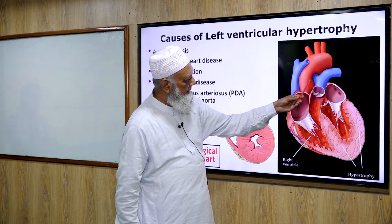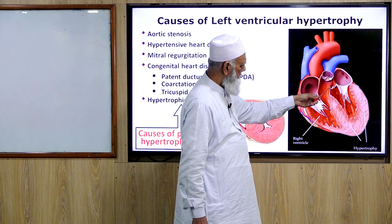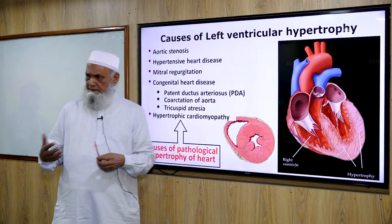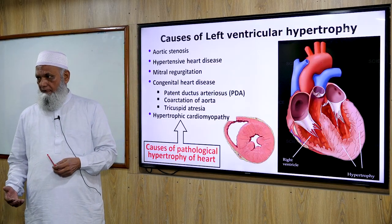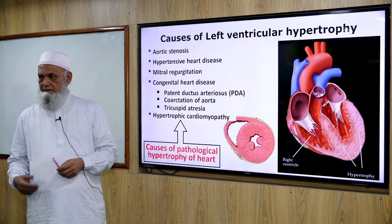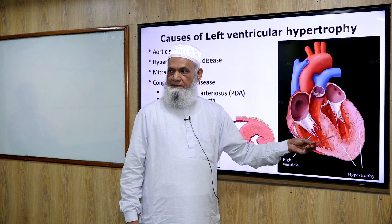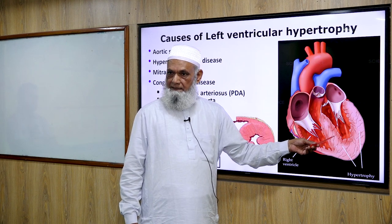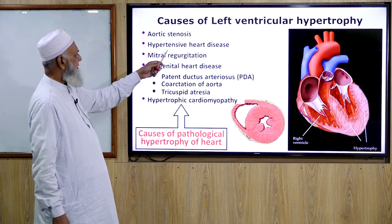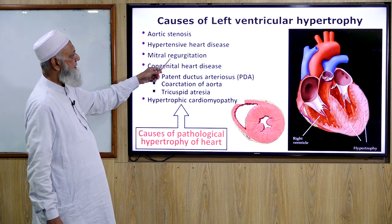When there is obstruction at the aortic opening, that part of the heart becomes overactive and its metabolic activity increases. Because cardiac myocytes are permanent cells, they undergo hypertrophy. This applies to hypertensive heart disease and mitral regurgitation as well.